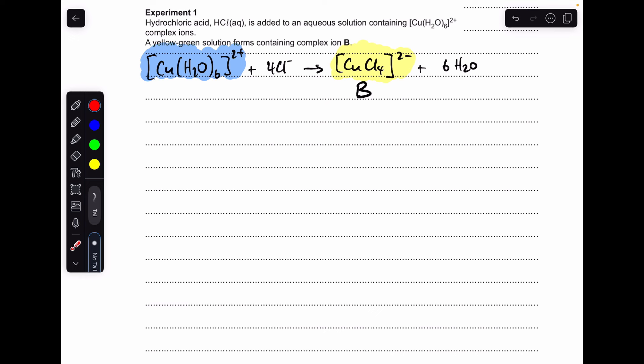We'll get a ligand exchange reaction taking place, and it forms this complex ion here, which is this yellowy-green colour. So this is complex B, so that's the answer for that bit. In terms of oxidation number change, there isn't one, because copper starts out at plus 2, and it's still plus 2 there.